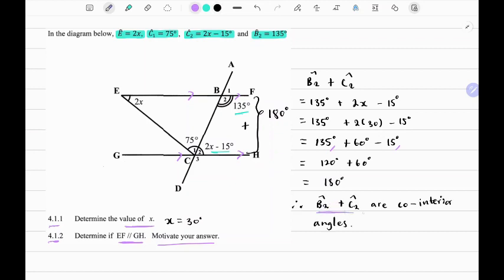And this equals 180 degrees. Therefore B2 plus C2 are co-interior angles and this implies that EF is parallel to GH. Thank you for watching, see you in the next one.